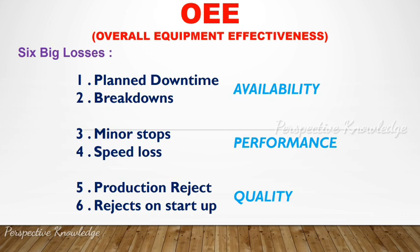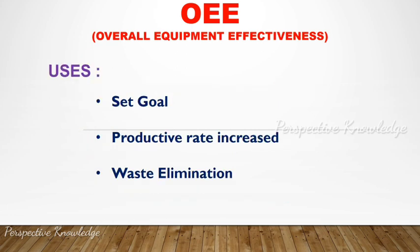OEE is 74.71%. The main losses of OEE are: 1.1 planned downtime or breakdowns — availability loss; 3.1 minor stops and speed loss — performance loss; and production rejects and start-up losses — quality issues. These are the major losses of OEE. OEE is used to set goals, increase productive rate, and eliminate waste.